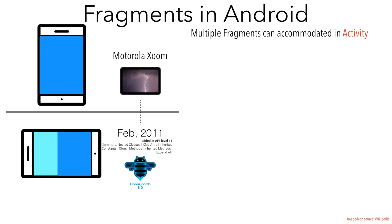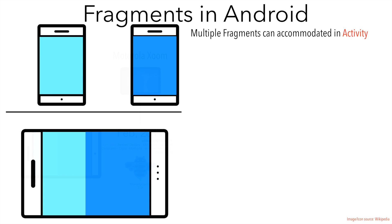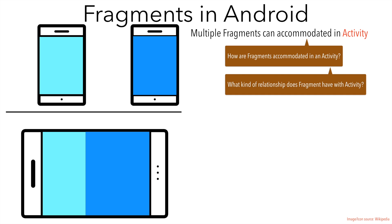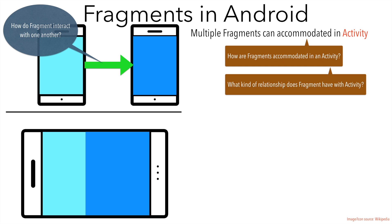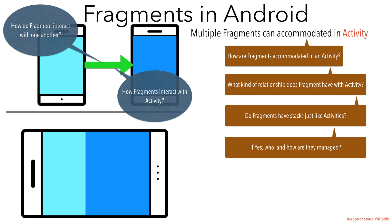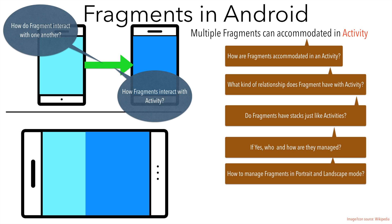When you think about this, it will lead to a lot of questions: How are fragments accommodated in an activity? What kind of relationship does a fragment have with the activity? How do fragments communicate with one another? How do fragments communicate with the activity itself? Do fragments have stacks just like activities, and if yes, who manages them and how? Is it the developer's responsibility to manage the fragment stack? How to manage fragments in portrait and landscape mode? And more importantly, how to make it backward compatible? These are some very common questions that anyone getting started with fragments would have.